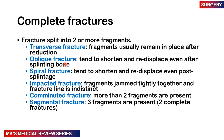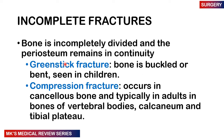An oblique fracture tends to shorten and re-displace even after splinting. A spiral fracture also tends to shorten and re-displace post-splintage. An impacted fracture has fragments jammed together tightly with an indistinct fracture line. Comminuted fractures have more than two fragments — very different from segmental, where the bone is fractured at two different sites creating three segments. Incomplete fractures leave the periosteum continuous on the other side. A greenstick fracture, where the bone is buckled or bent, is only seen in children.